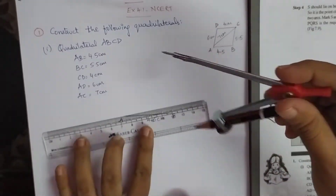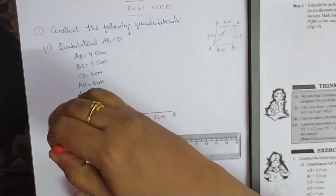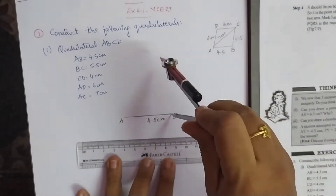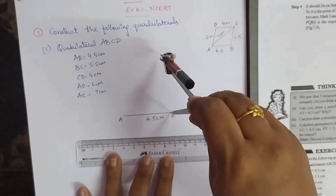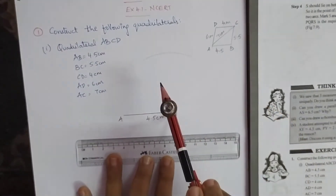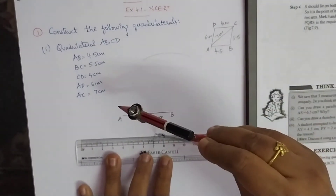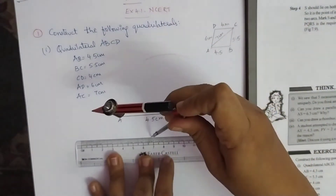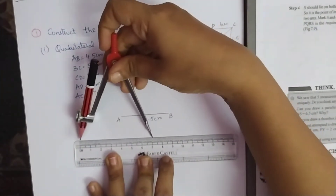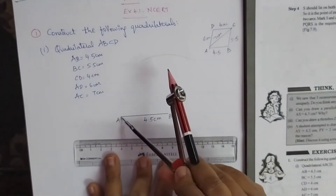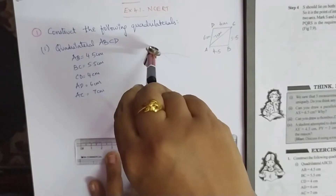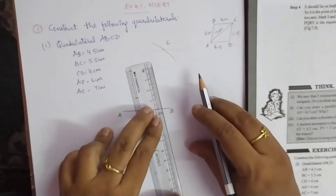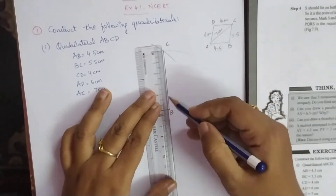From B, draw an arc from 0 to 5.5. Hold the end of the compass and draw an arc of 5.5 cm from B. Now the diagonal AC is 7 cm — draw the diagonal first, so that you first draw a triangle. Measure 7 cm and draw from A and cut at 7 cm. This point is our point C. Join BC and AC.